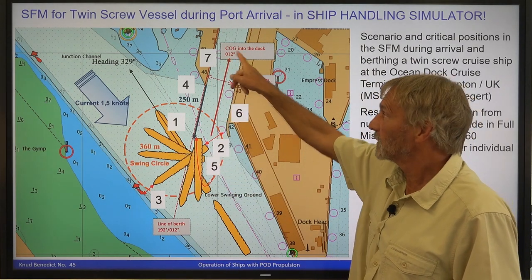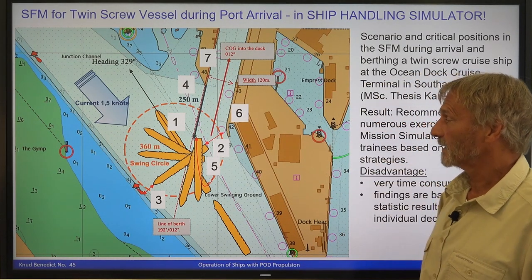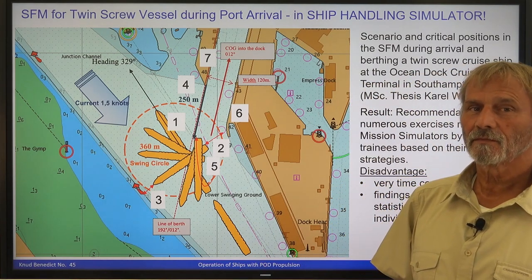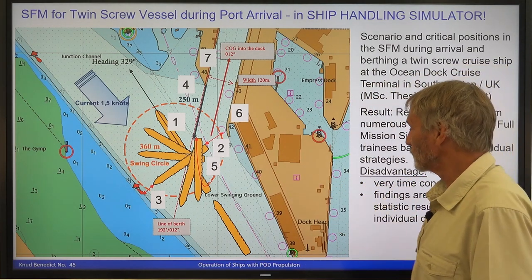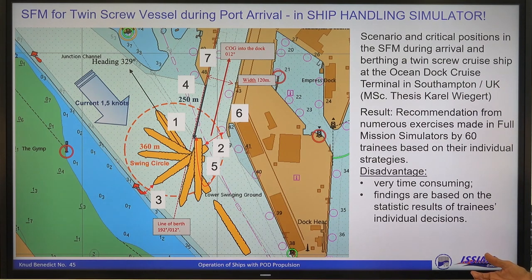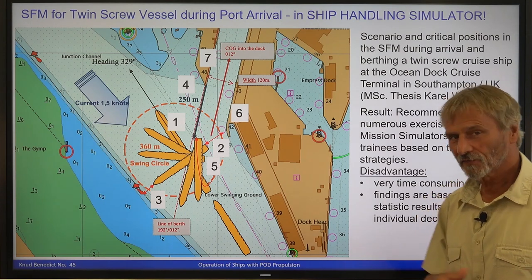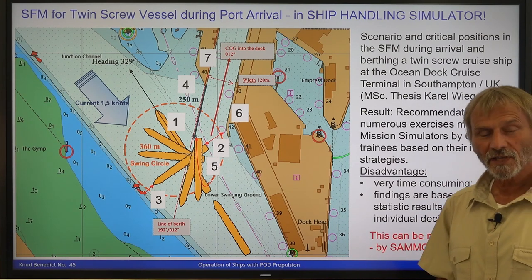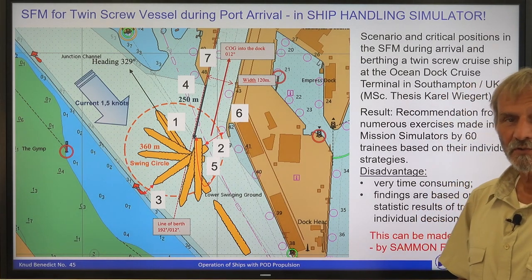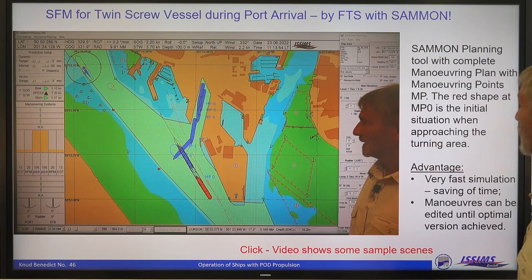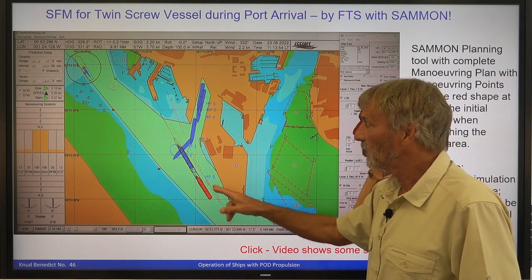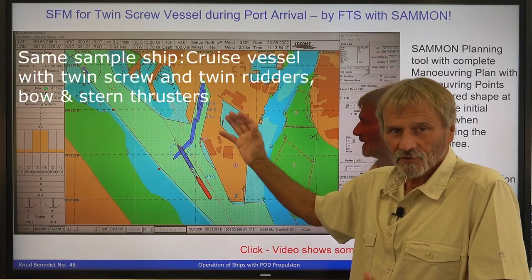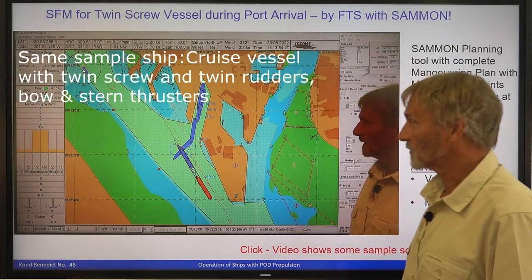They were trying to go into the port of Southampton, to turn the ship there and then go astern into the space alongside the starboard side. From all these experiences he gave some advice on how to do this maneuver. The disadvantage of this work, however, is that it's very, very time consuming — the findings are based on statistical results of these candidates. There could be better ideas to make it in fast time simulation based on our salmon tool, and this I did. What you see here is already the complete maneuvering plan, and it looks similar to what Karel Wiegert achieved by his 60 simulations.